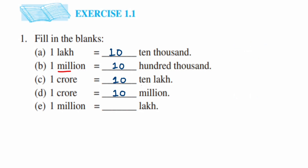Last question: one million equals how many lakhs? One million is ten lakh, with six zeros. Dividing by one lakh (five zeros): cancel the five zeros, and ten is left. So one million is equal to ten lakh.